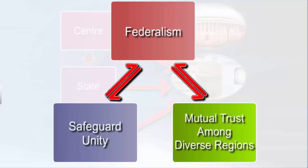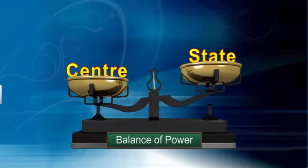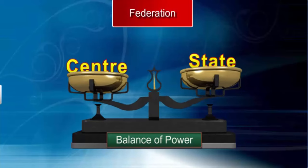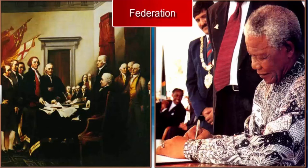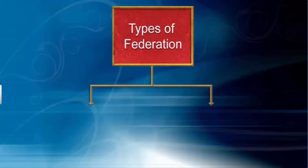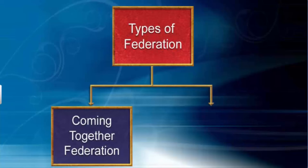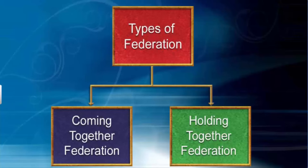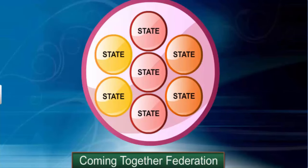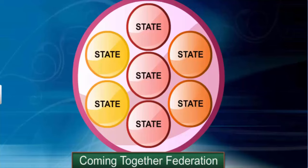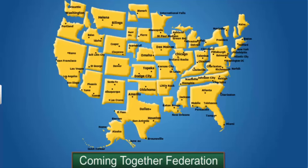The balance of power between the center and state governments can vary from federation to federation, depending mainly on the historical context in which the federation was formed. There are two ways in which federations can be formed: Coming Together Federations and Holding Together Federations. In Coming Together Federations, independent states come together on their own to form a bigger unit, pooling sovereignty and retaining identity to increase their security.